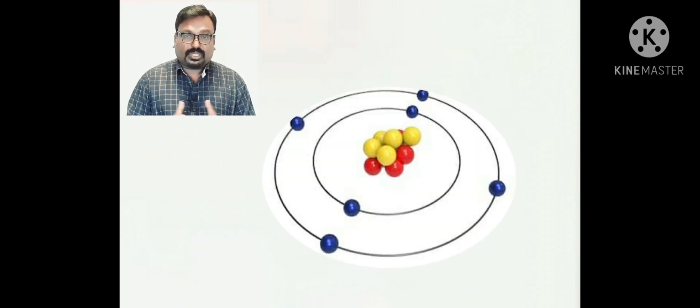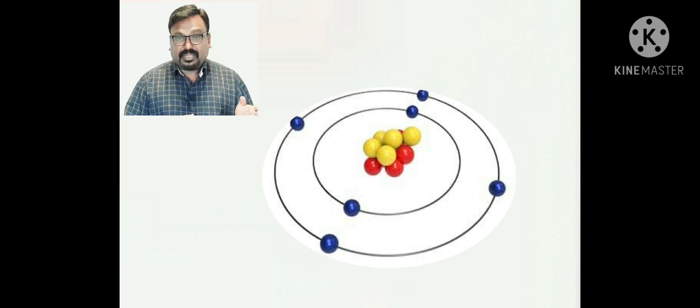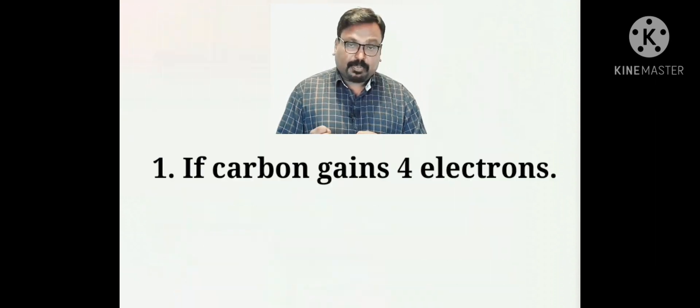As you see the electronic configuration of carbon, it is evident that carbon can attain stability or complete its octet configuration either by gaining four electrons or by losing four electrons. Now let us consider the first condition — what happens if carbon gains four electrons?